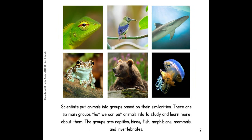Scientists put animals into groups based on their similarities. There are six main groups that we put animals into to study and learn more about them. The groups are reptiles, birds, fish, amphibians, mammals, and invertebrates.